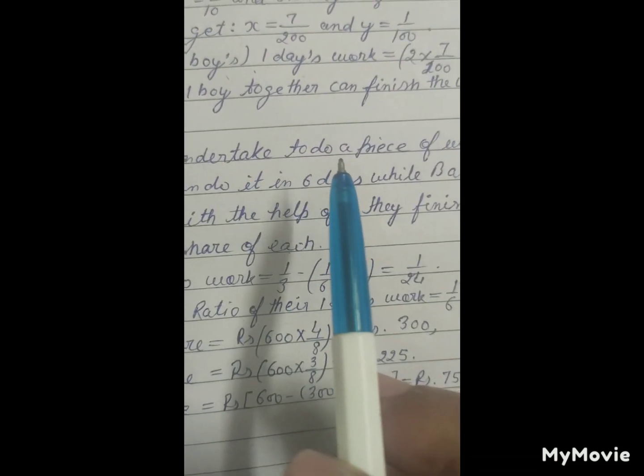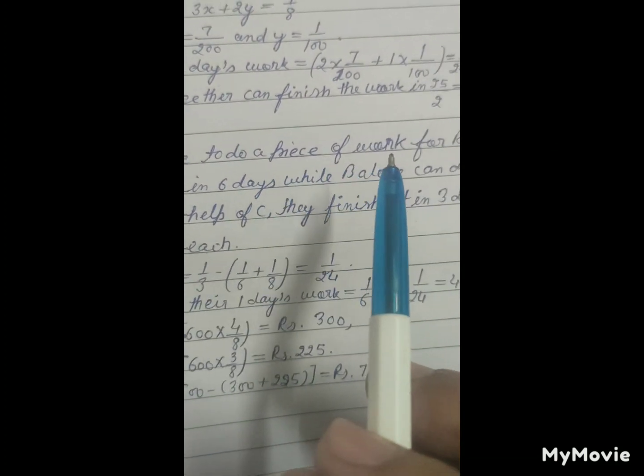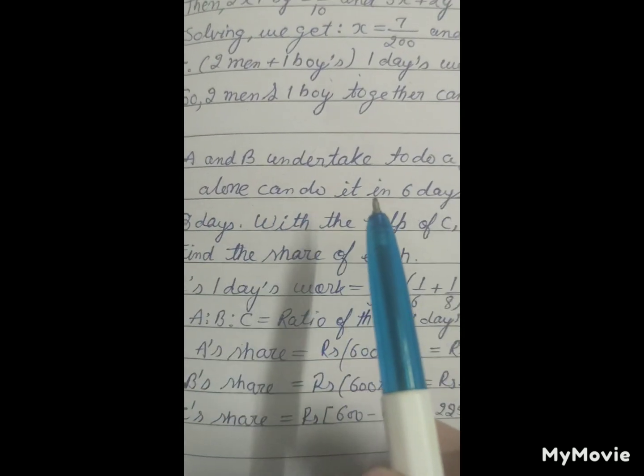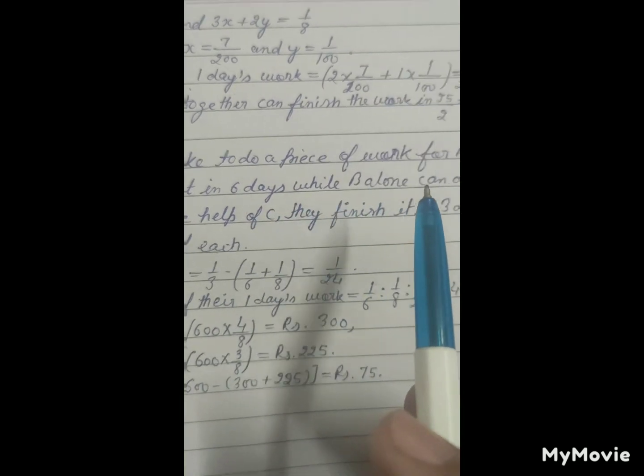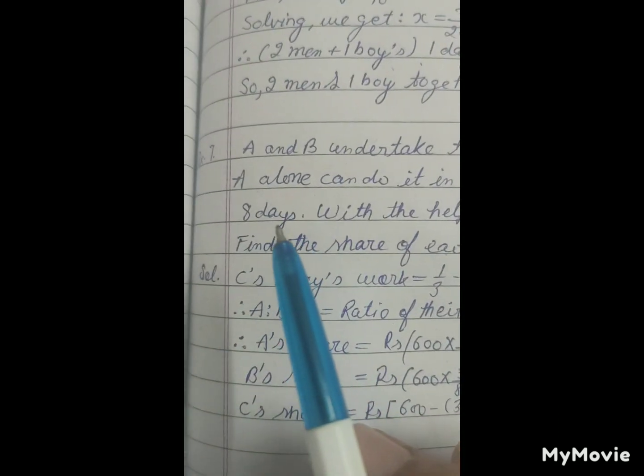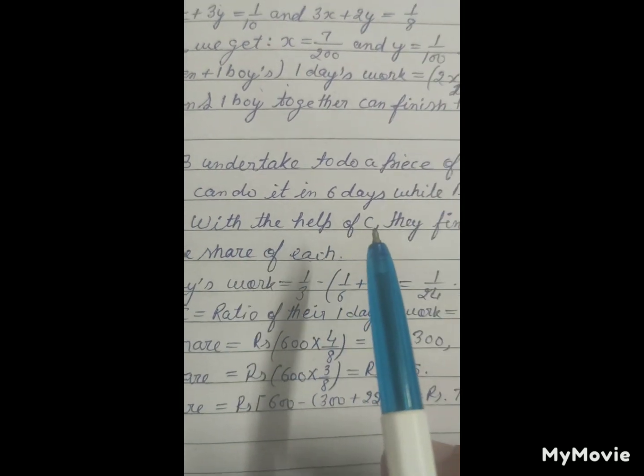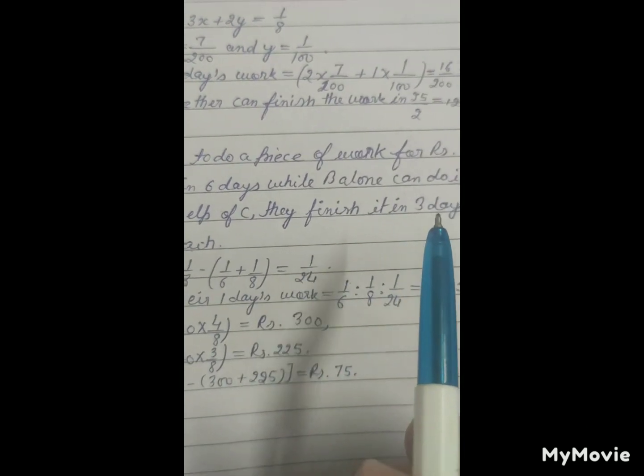A and B undertake to do a piece of work for Rs. 600. A alone can do it in six days while B alone can do it in eight days. With the help of C they finish it